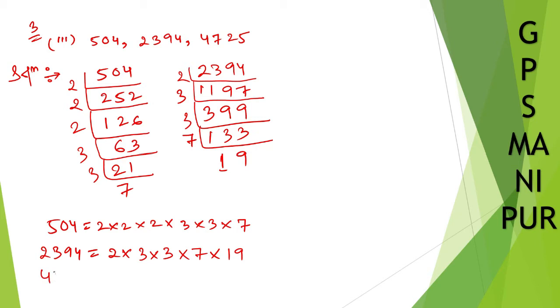Now, 4725. Let me divide by 5: 945. I think we can divide by 3 also. Let me start with 3. 3 into 4725 gives 1575. 3 into 1575 gives 525.